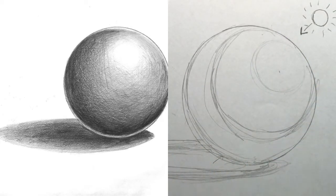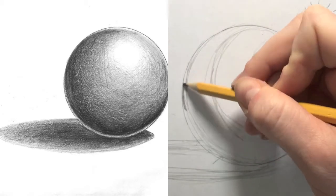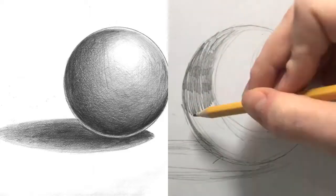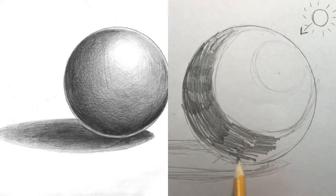Start with the darkest parts by using hatching that follows the round shape of the sphere. This will give it a more realistic look. Watch as I shade my darkest value first.